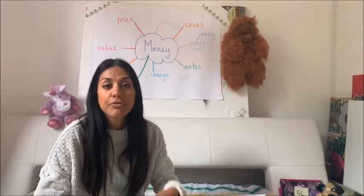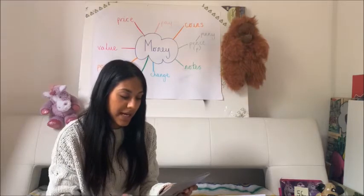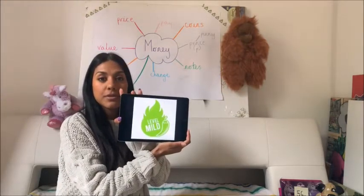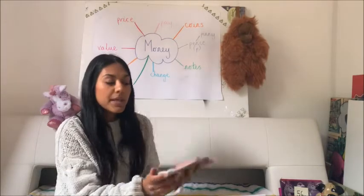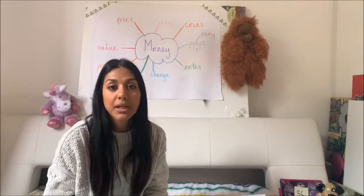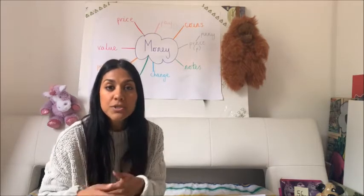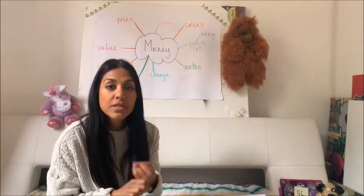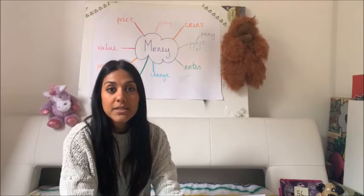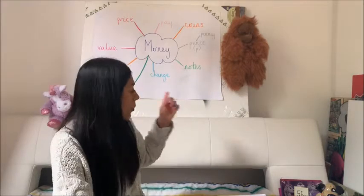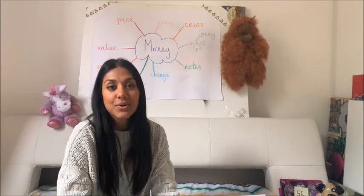Now I'm going to go through three levels of challenge. You're very used to this — I'm going to have mild, spicy, and hot. You can choose the level that you think is challenging enough for you, and you can do more than one level — that would be absolutely brilliant. I will be starting with mild, then going to spicy, then hot. There will also be worksheets on the school website that relate to this activity. So get your pen and pencil ready and let's get started.